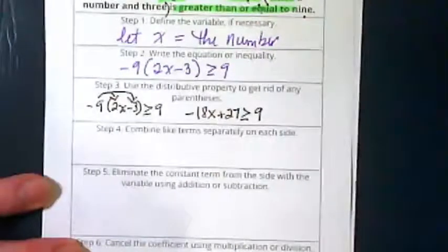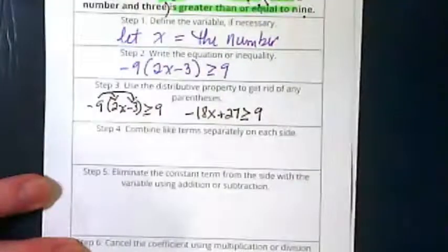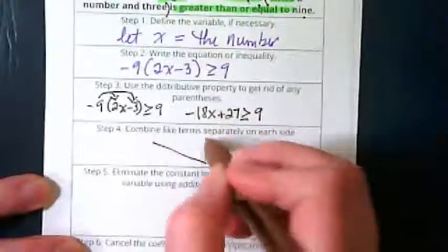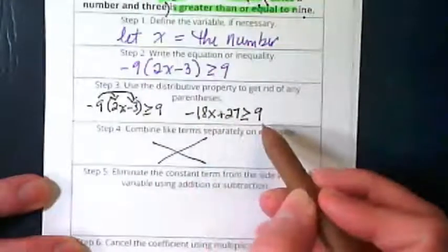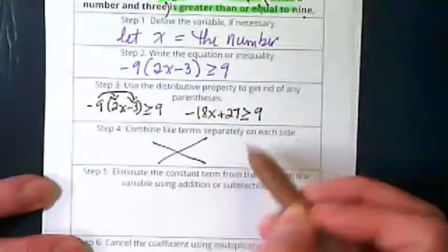Do I need to combine like terms? There's nothing to combine on this side, and there's only a 9 over here, so we don't have to do this step.